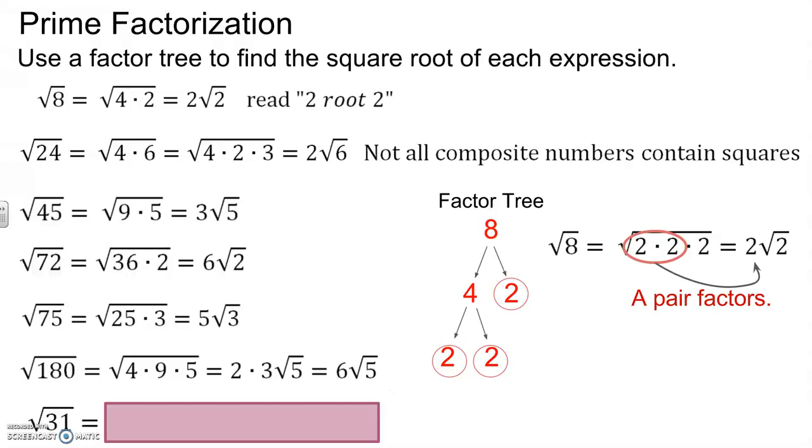In this case, 4 times 9 times 5. 4 and 9 are both perfect squares. So the square root of 4 is 2, and the square root of 9 is 3. So they both factored out to the left of the radical. And then we find their product to get 6 root of 5.